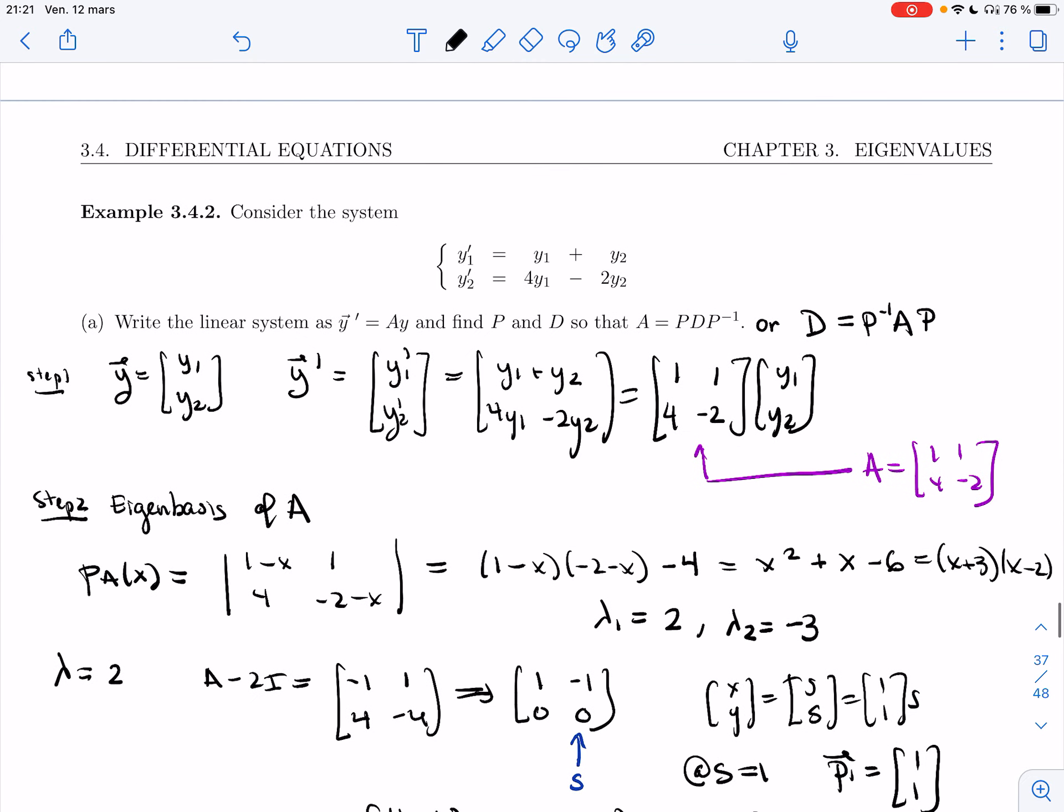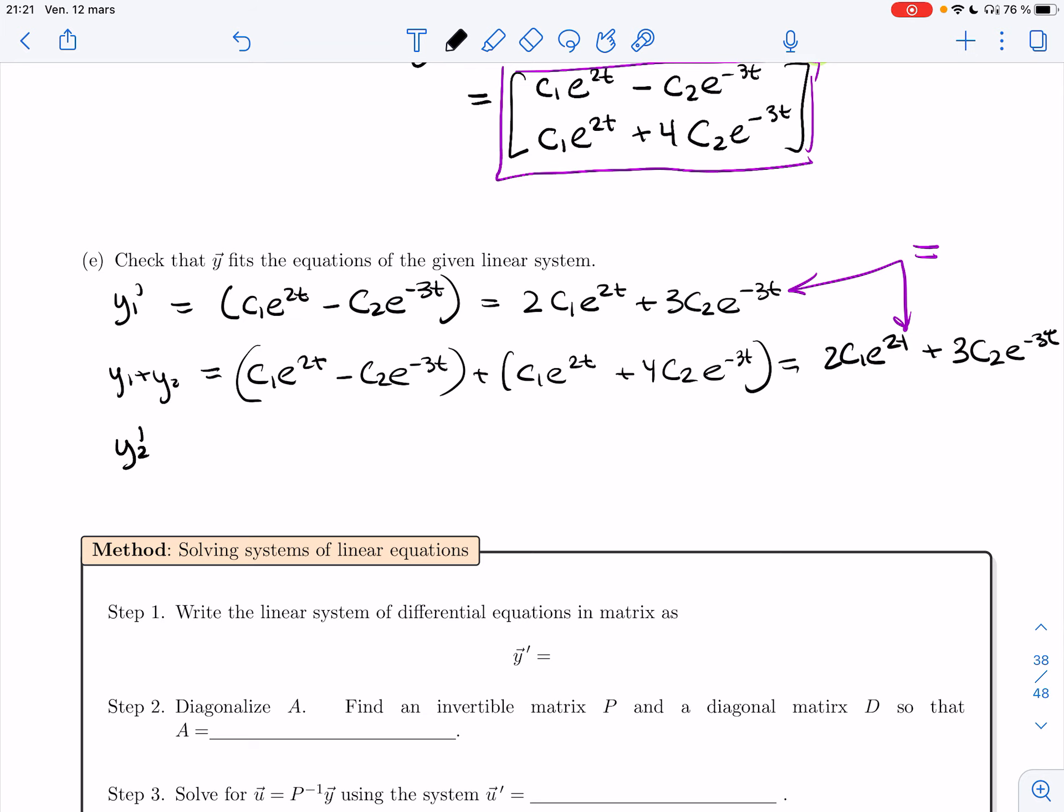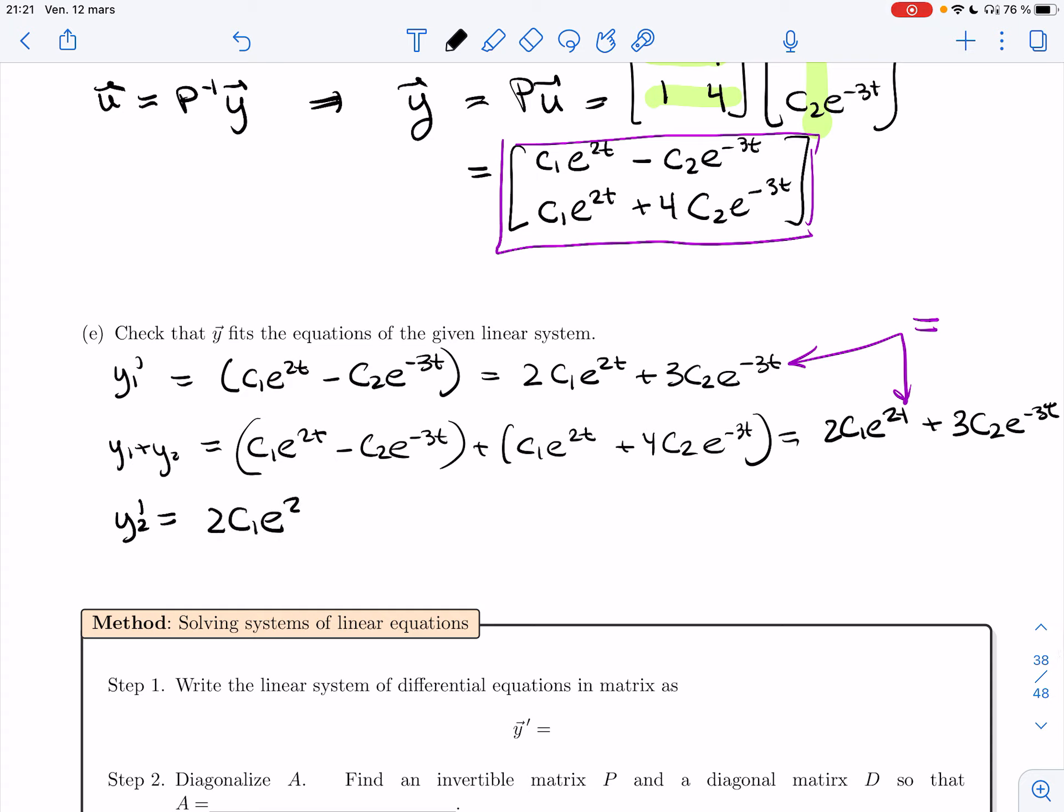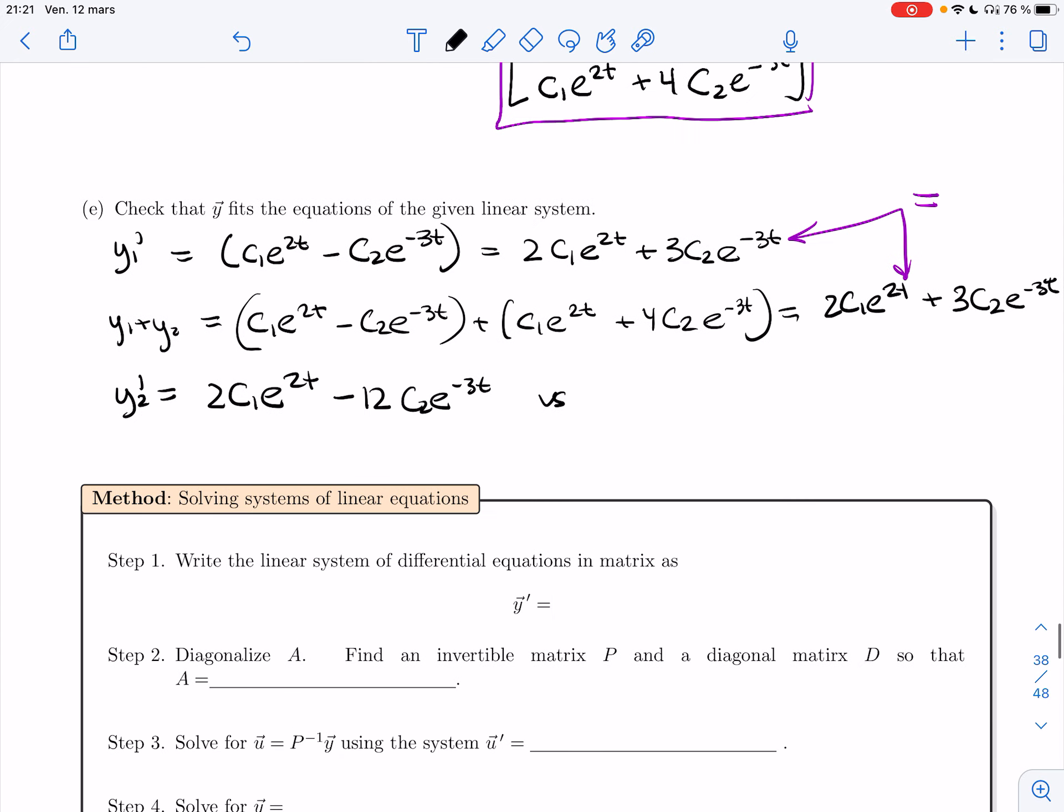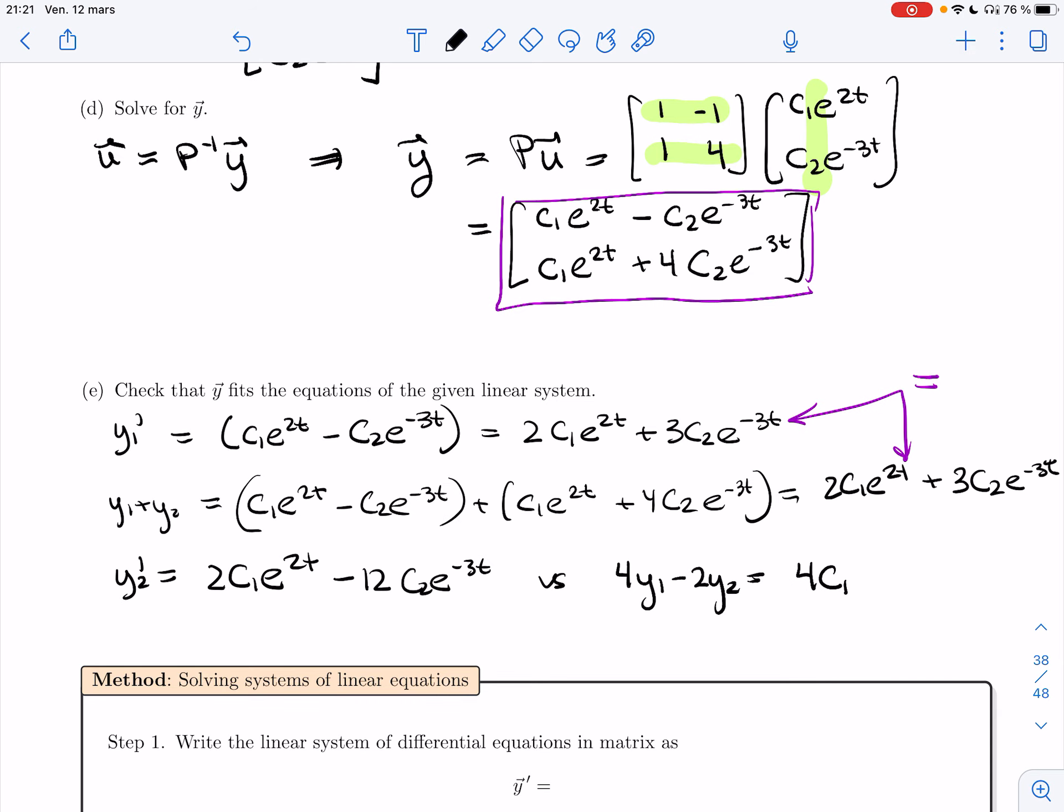That's the first equation. Let's check the second one quickly. Second one was y2 prime is 4y1 minus 2y2. So y2 prime, let me do it a bit more shortly. So y2 prime, the derivative of the second one is 2c1e to the 2t minus 12c2e to the minus 3t. And I want to compare this to 4y1 minus 2y2. So 4y1, that gives me 4c1 minus 2c1. That works. And then 4, so that minus 4c2 plus, minus 8c2e to the minus 3t. And so these are equal. And so we did find solutions.